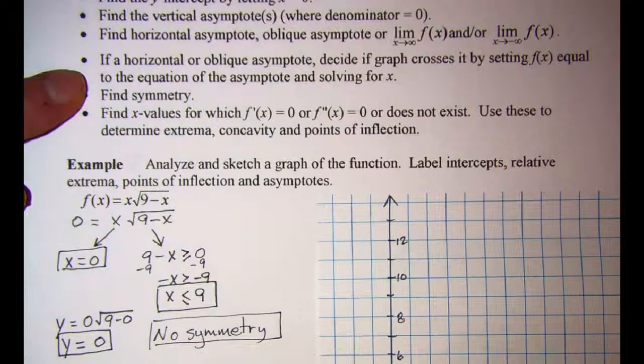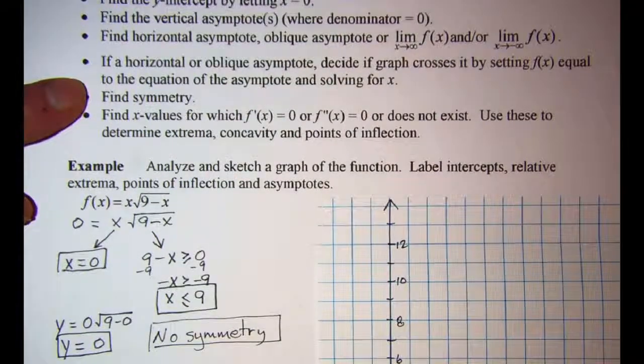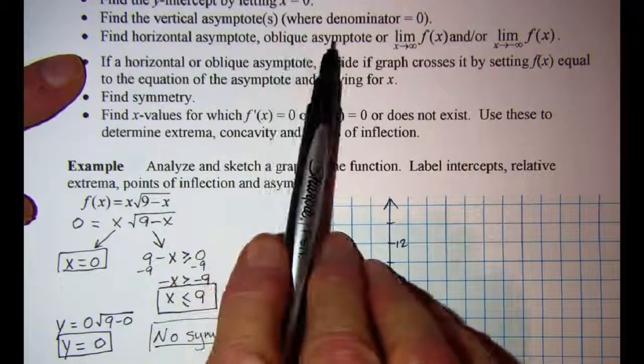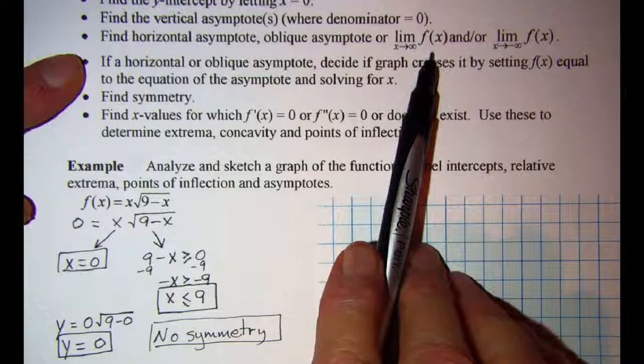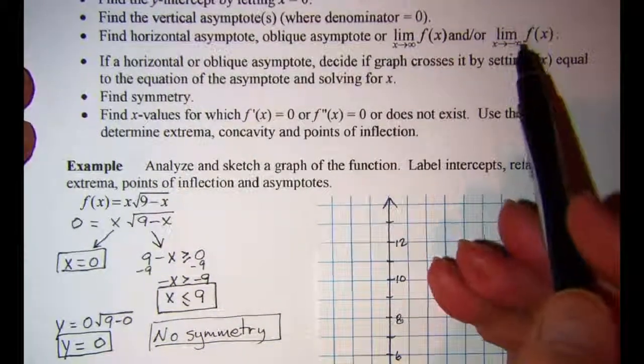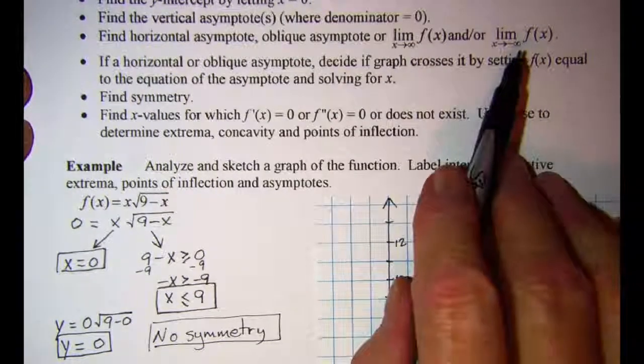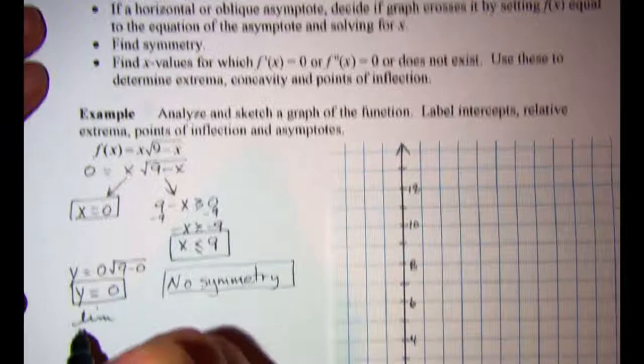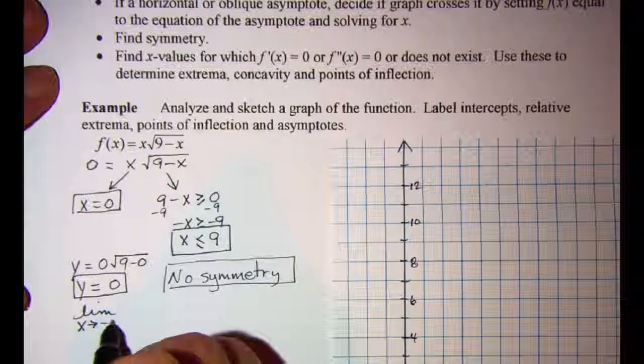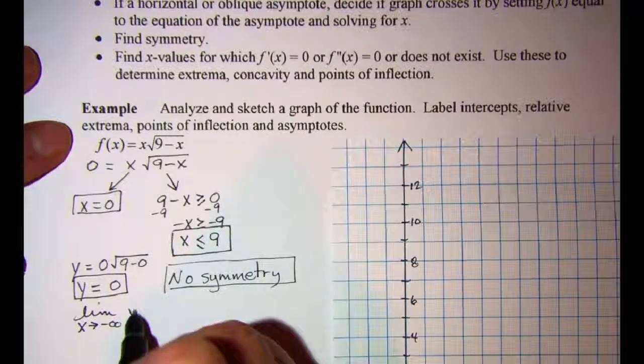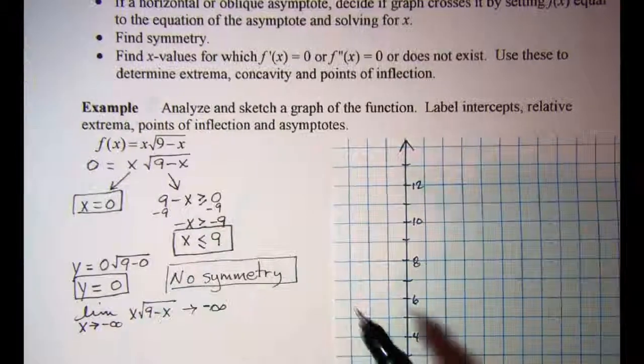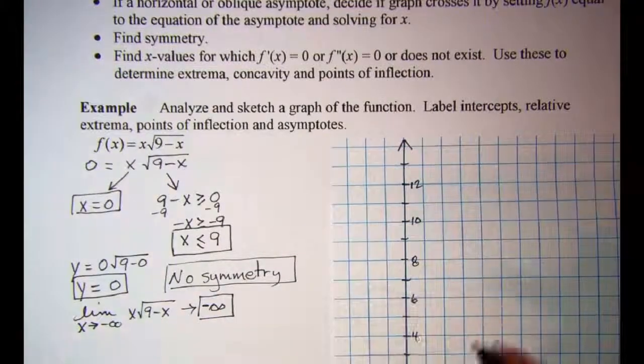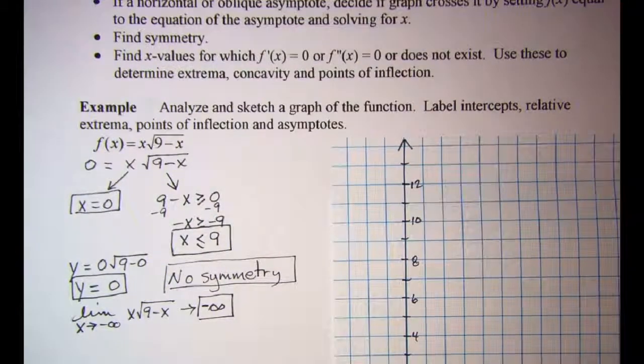Since this is not a rational function, we are not going to have any vertical asymptotes. For horizontal asymptote, oblique asymptote, those occur when we have a rational function. But we can find the limit as x approaches negative infinity. Since our domain is restricted, we are not going to be able to approach positive infinity. The limit as x approaches negative infinity of our expression is just going to be negative infinity. So we are just going to head down toward negative infinity on the left side of our graph.